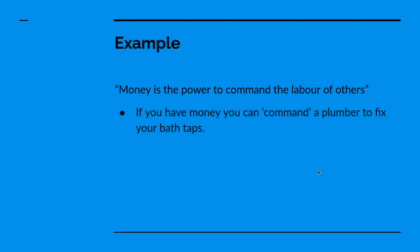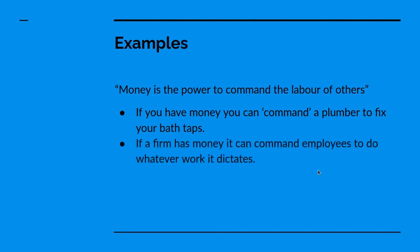If you have money, you can command a plumber to fix your bathtubs. If a firm has money, it can command employees to do whatever work it dictates. If a monarch has money, they can command armies. In these cases, the power of command is clear.